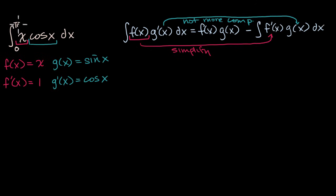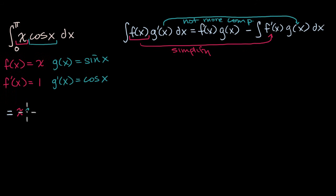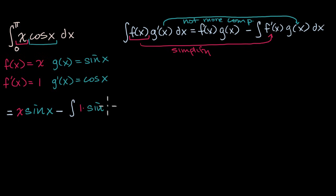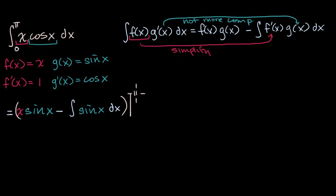You could think about plus c's and all of that, but remember this is going to be a definite integral, so all those arbitrary constants are going to get canceled out. Now let's apply integration by parts. This is going to be equal to f of x times g of x — that is x times sine of x — minus the integral of f prime of x, which is just one, times g of x, which is sine of x. So we can just write that as sine of x dx. And remember, this is a definite integral, so we are going to evaluate this whole thing at pi and at zero and take the difference between the two.